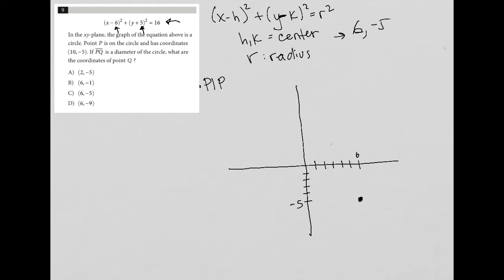The radius: since the r² part of the equation is 16, r² equals 16, which means that when I square root it, r actually equals 4.